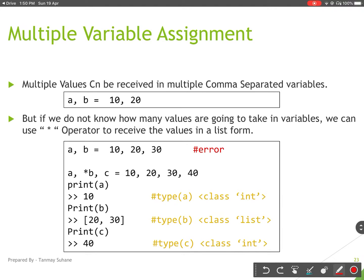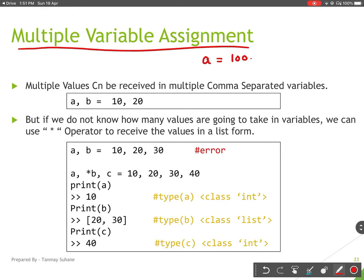Hello everyone, so today we will discuss multiple variable assignments. You can assign multiple values to multiple variables at once. As you already know how to assign a variable, if I have a variable 'a', I can assign a value to 'a' by just putting an equal sign and giving the value.